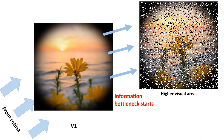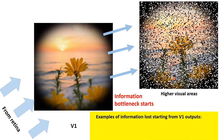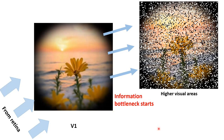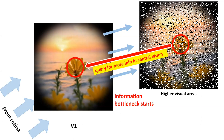Information loss starting from V1 — for example, eye-of-origin information is lost. Spatial details are also lost: complex cells versus simple cells, where complex cells are invariant to the exact location of bars within the receptive field. This loss occurs even in central vision. Imagine you can't see clearly whether something is a leopard or a flower — your brain then queries for specific information using an internal model of the world: what should a flower look like, what should a leopard look like? You narrow it down to two choices and query for the distinctive feature.